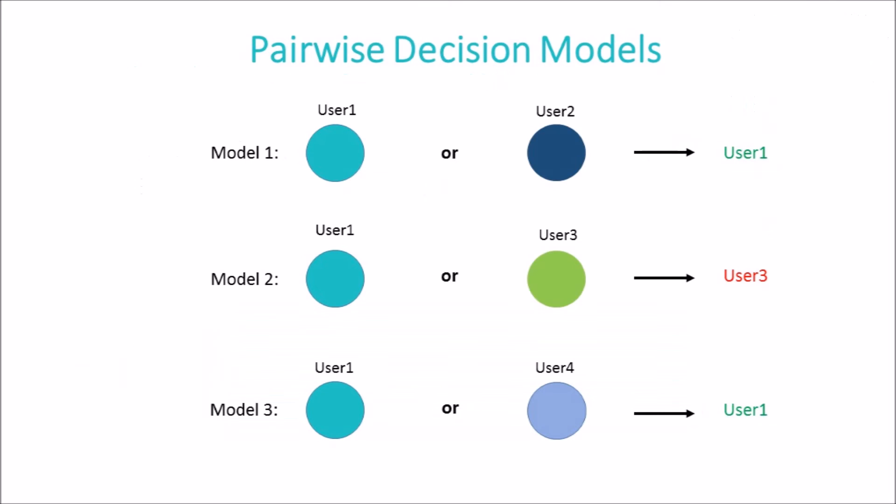For our task, we use hubness-aware regression. Our solution is based on pairwise decisions. We train a separate model for each pair of users. For example, we train a model that is able to decide whether a typing pattern is more likely to belong to user 1 or user 2, another model for user 1 or user 3, and so on.